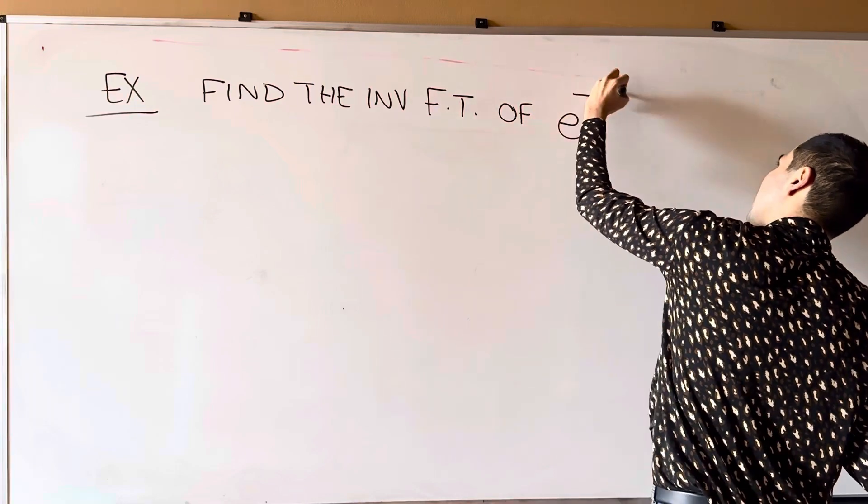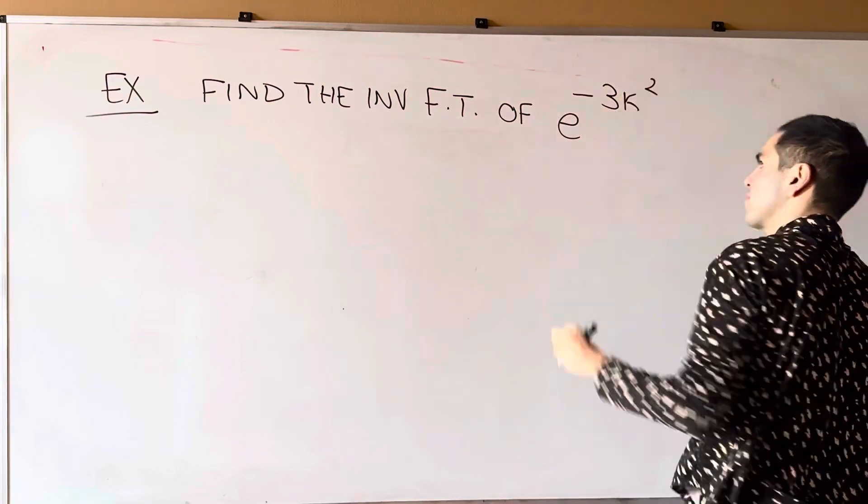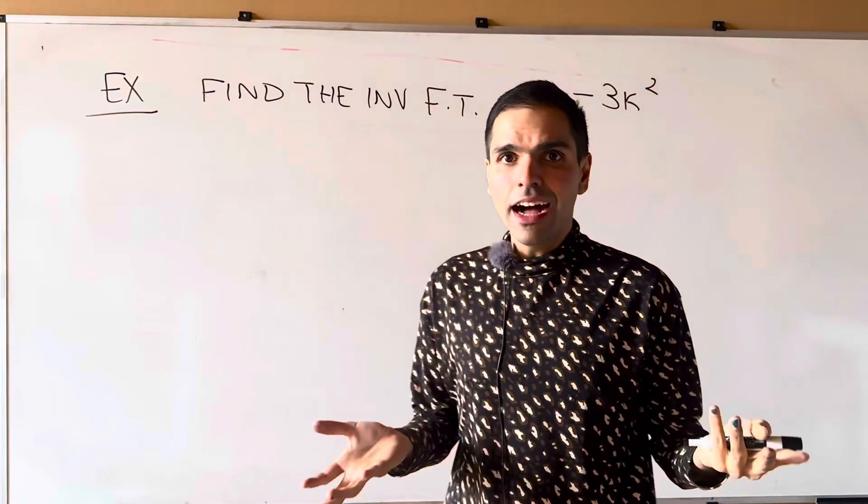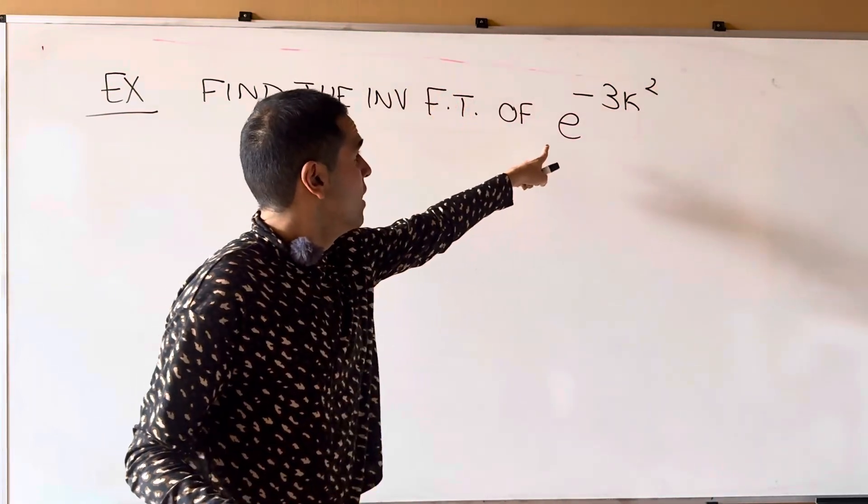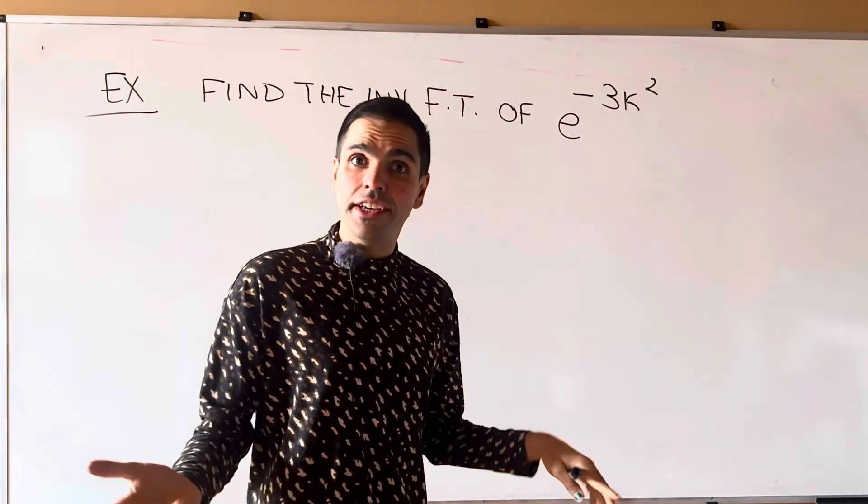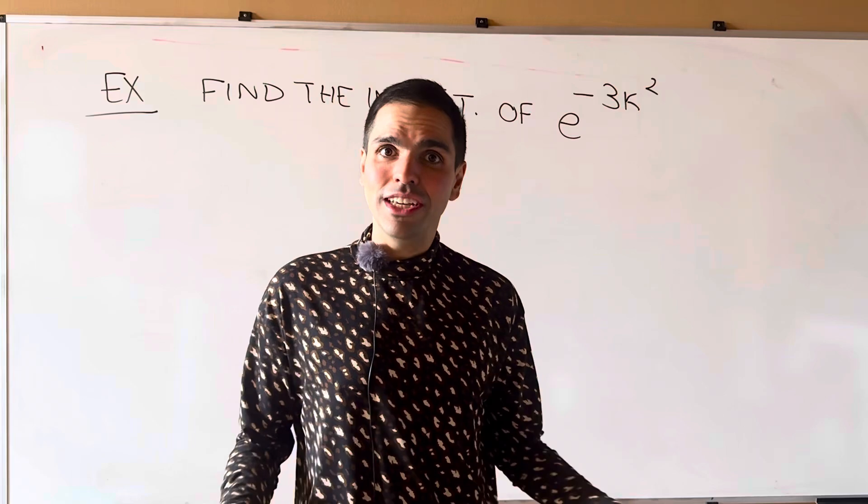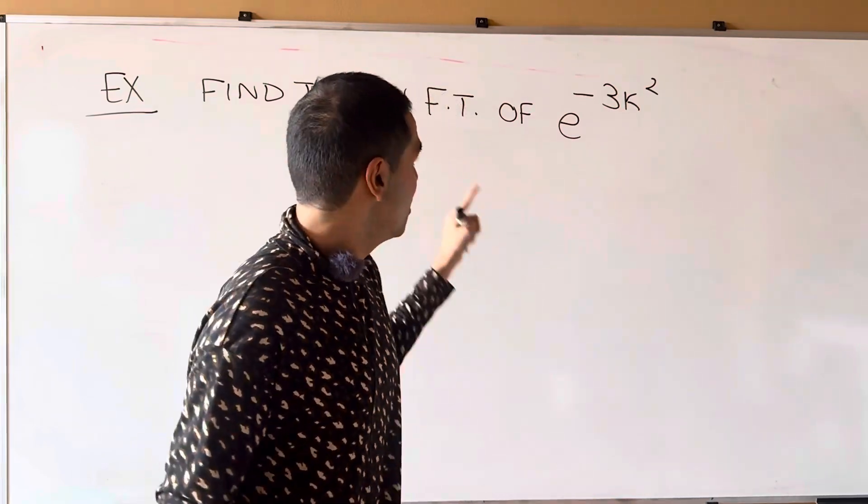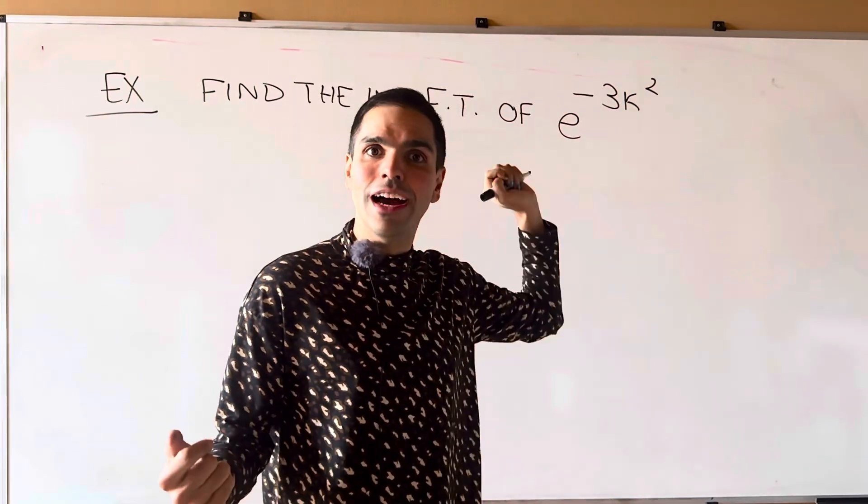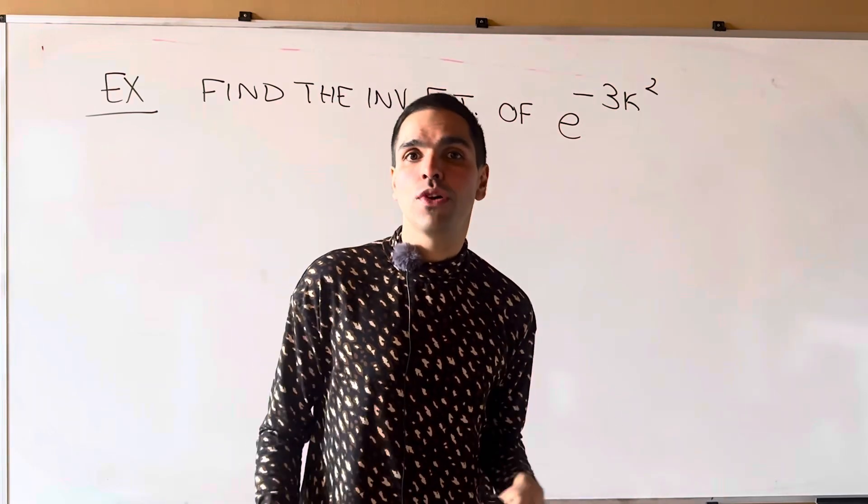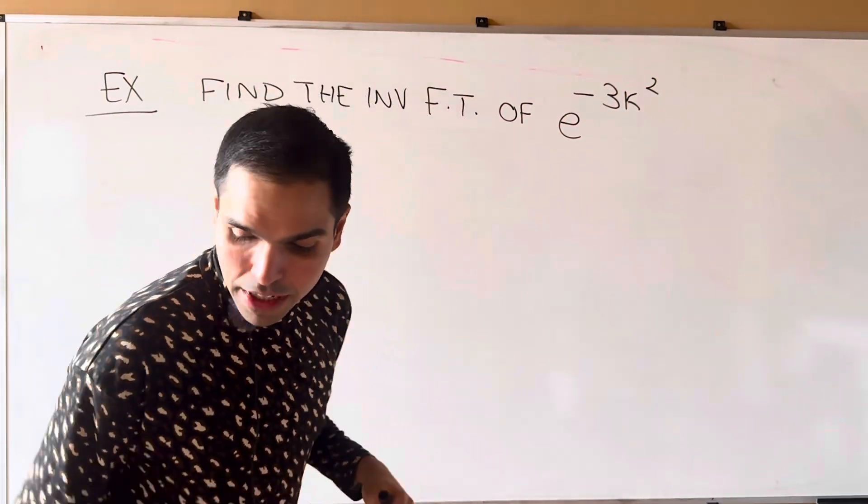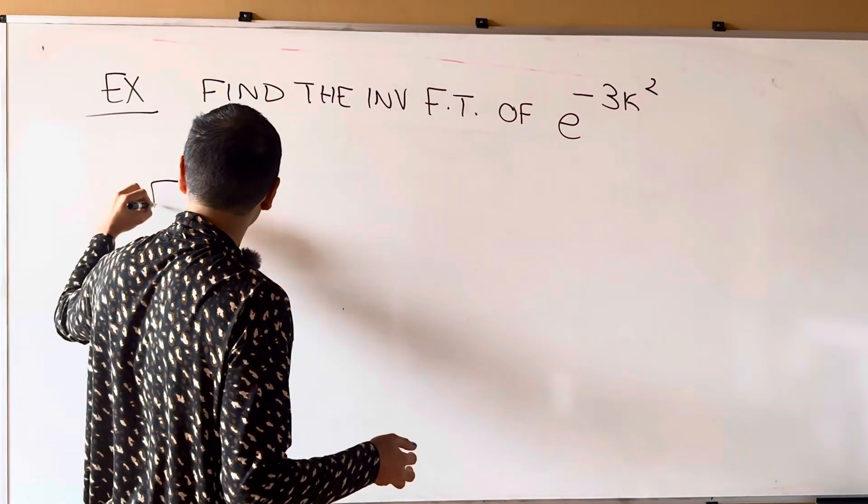of e to the minus 3 kappa squared. And you could just plug into the formula of the inverse Fourier transform. But remember, because we have a Gaussian, we have a much more explicit formula.